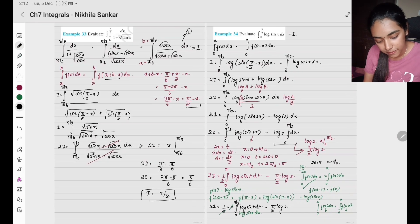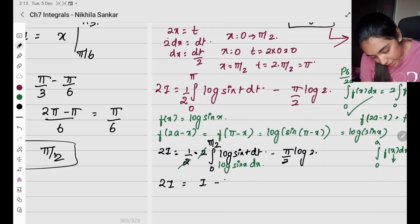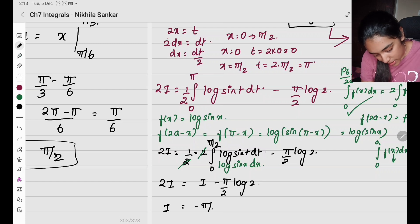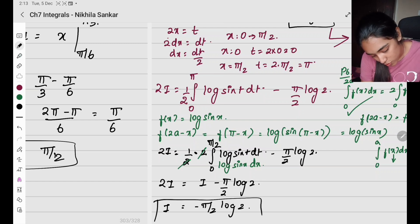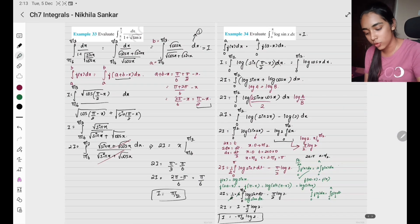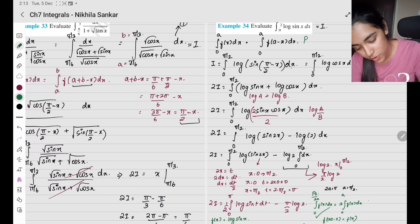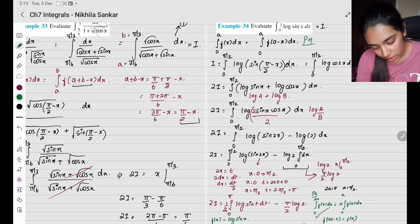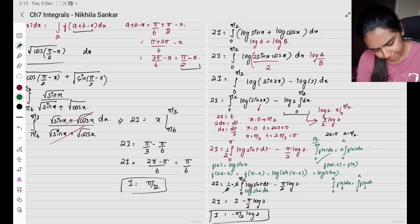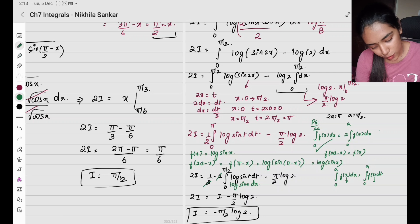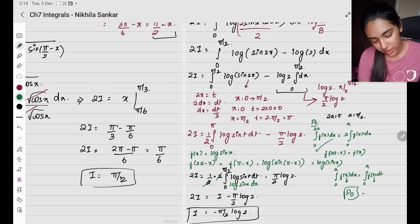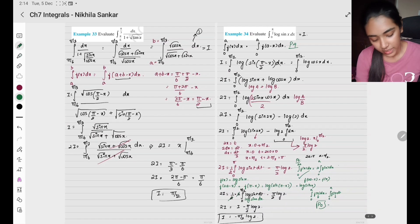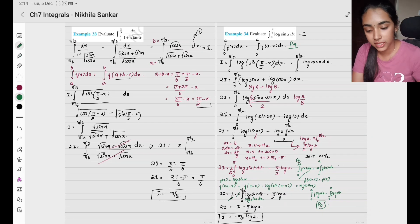Using property 0 — integral of f(x) dx equals integral of f(t) dt — the variable name doesn't matter. So (1/2) times 2 times integral from 0 to π/2 of log(sin t) dt is just i. Therefore 2i equals i minus (π/2) log 2. Bringing i to the other side: 2i minus i = i equals −(π/2) log 2. This is the final answer. We used property 4, property 6, and property 0, along with the substitution method.